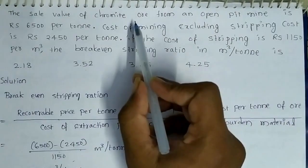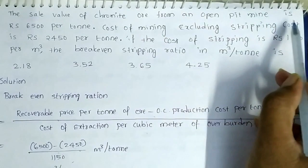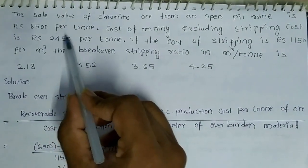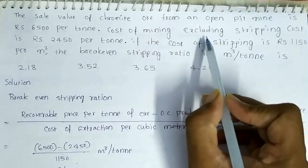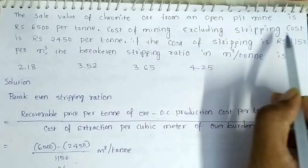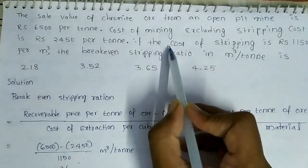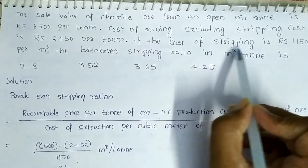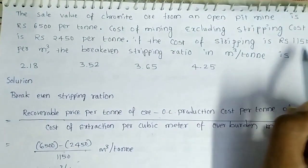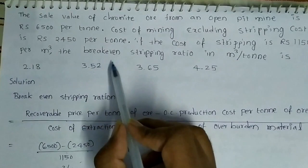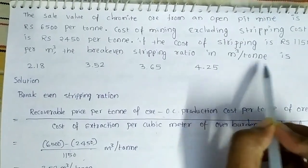The sale value of chromite ore from an open pit mine is Rs.6500 per ton. The cost of mining excluding stripping cost is Rs.2450 per ton. The cost of stripping is Rs.1150 per cubic meter. Find the breakeven stripping ratio in cubic meter per ton.